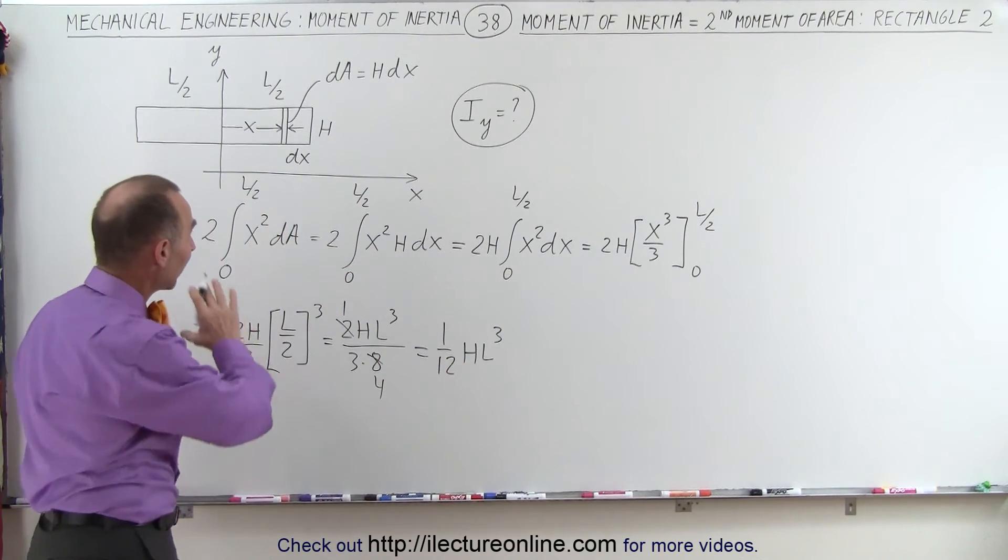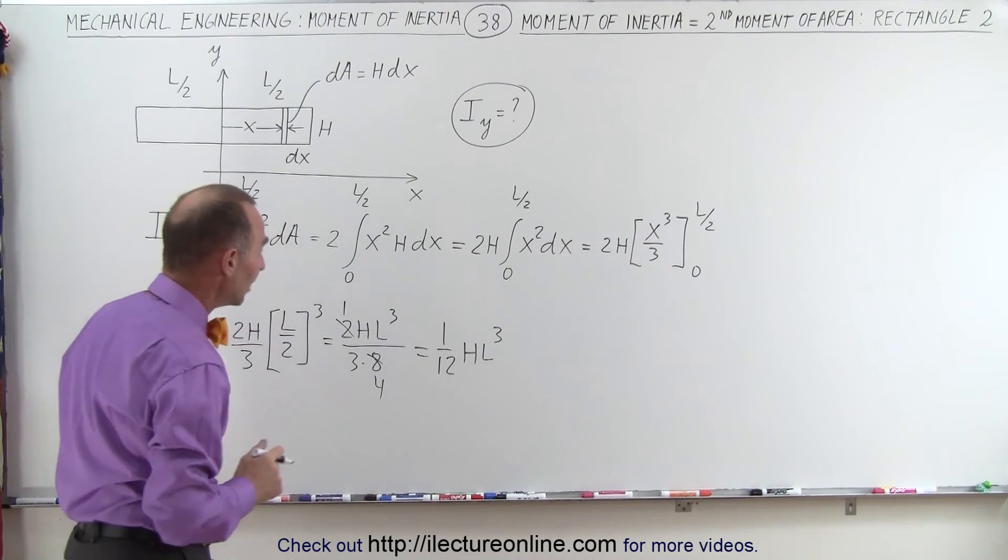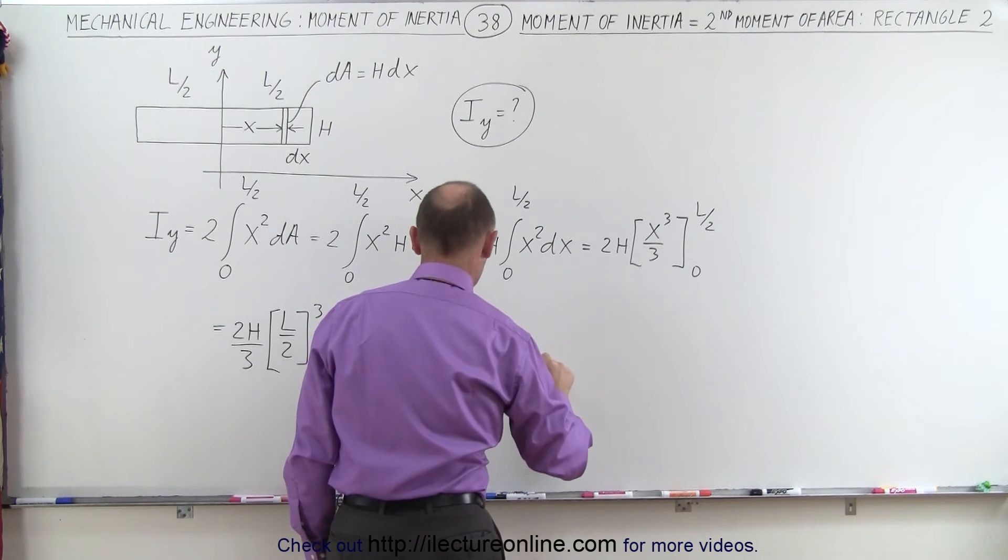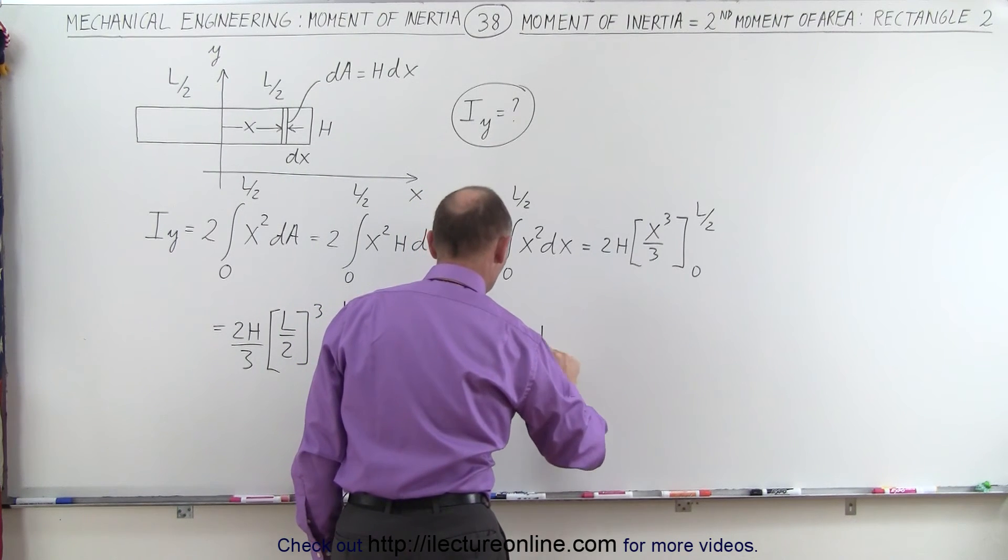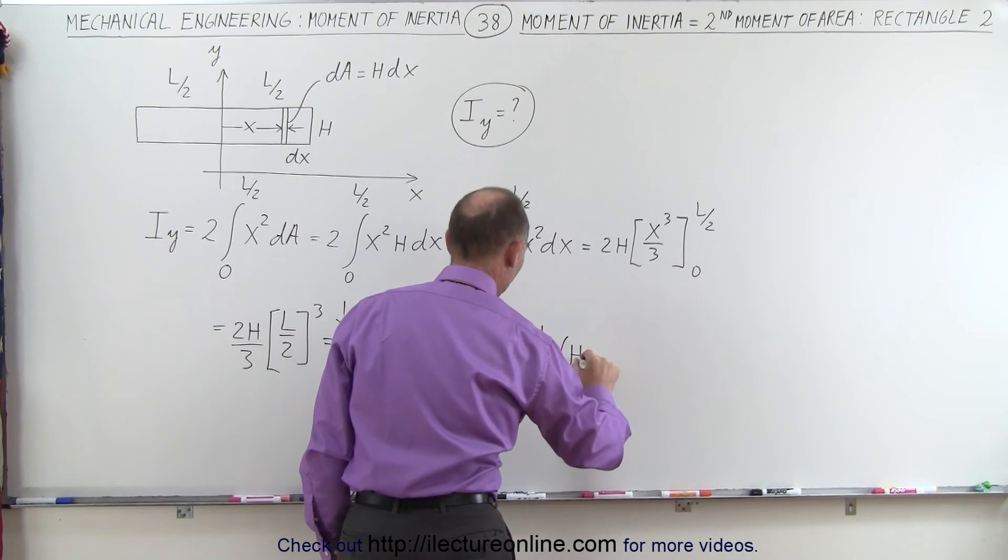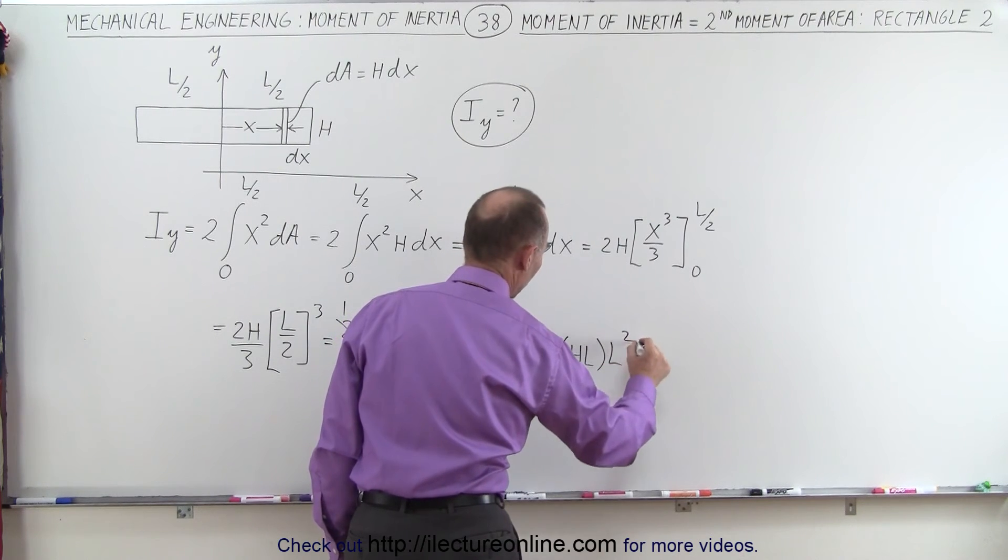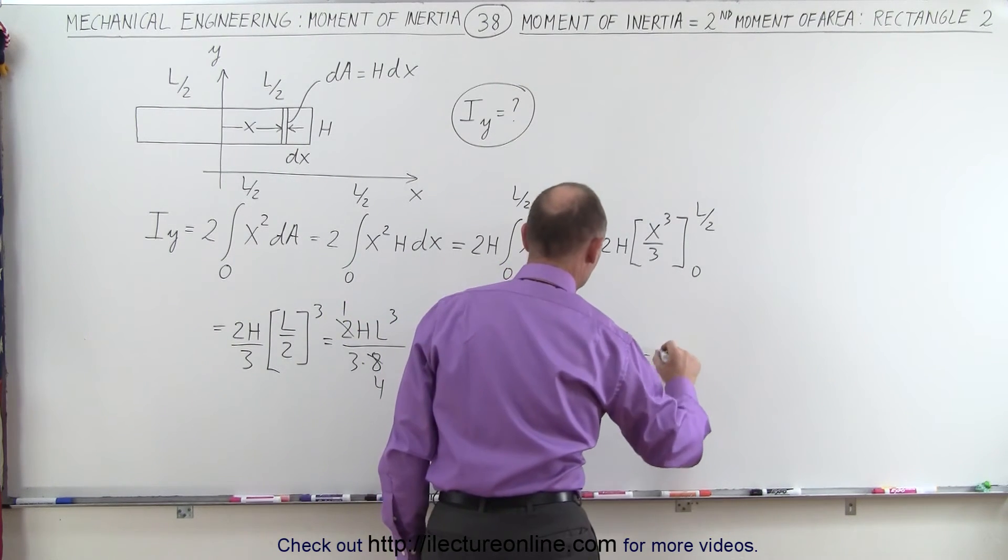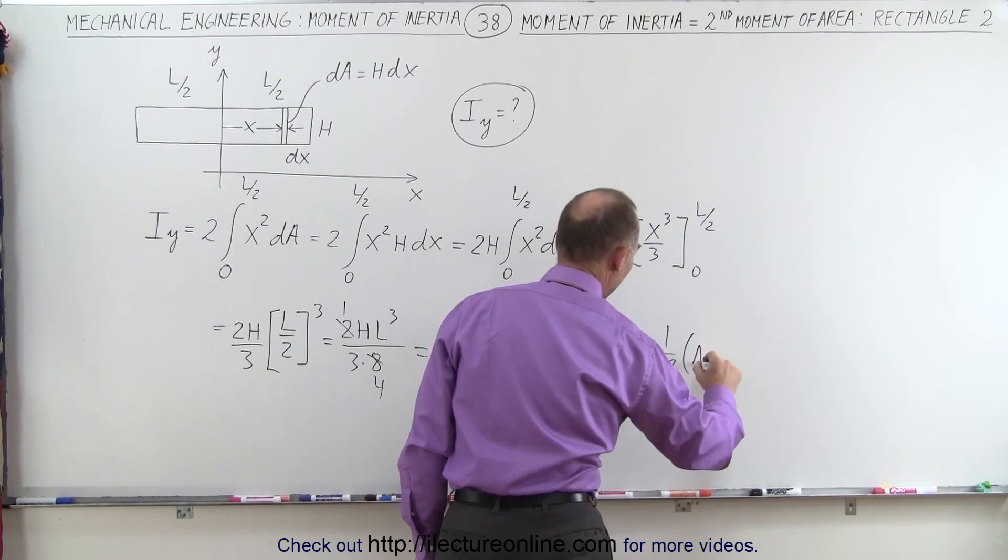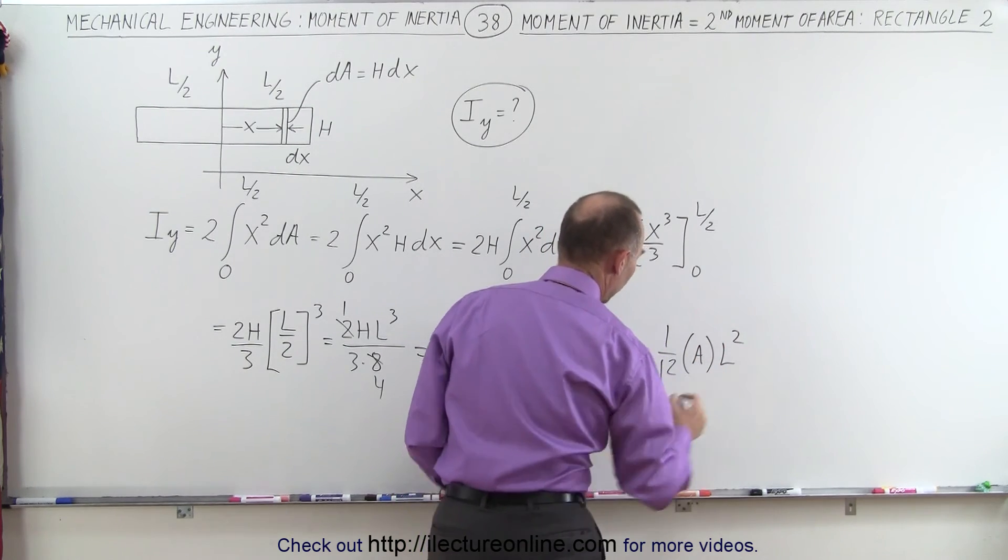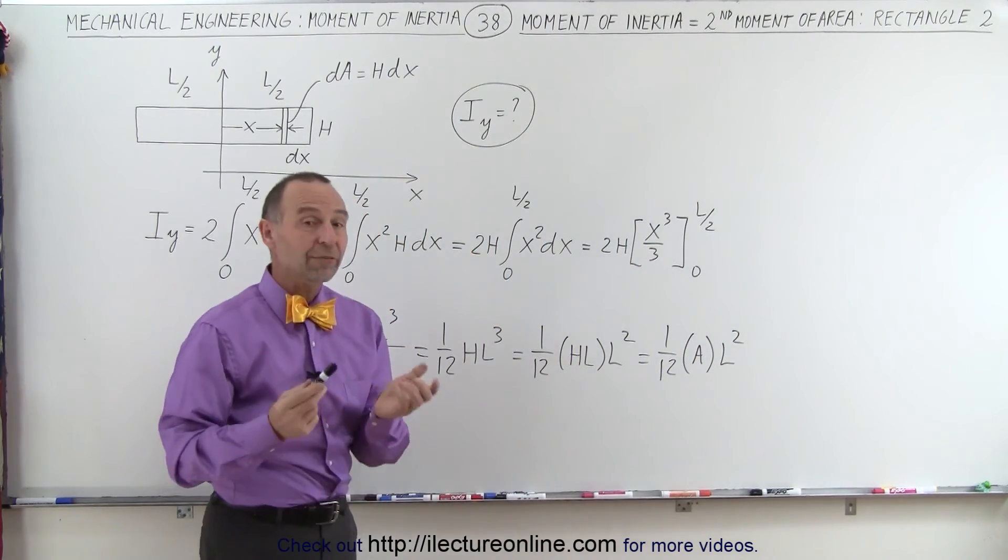Now realizing that the area of that rectangle is length times h, so we can take that out and write this as 1/12th HL times L squared, and of course HL is the area, so that's 1/12th times the area times L squared.